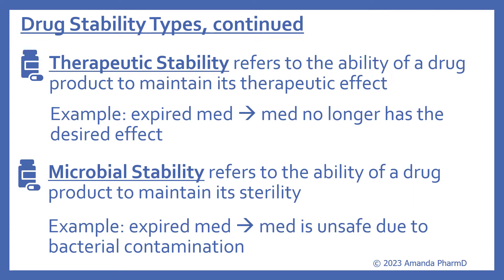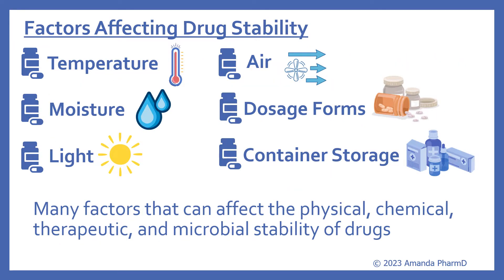Microbial stability refers to the ability of a drug product to maintain its sterility. An example could be an expired medication where it has become unsafe due to bacterial contamination — it's no longer sterile and has lost its microbial stability. Now we'll look at some factors affecting drug stability. There are many factors that can affect the physical, chemical, therapeutic, and microbial stability of drugs, and these include temperature, moisture, light, air, dosage forms, and the container storage.